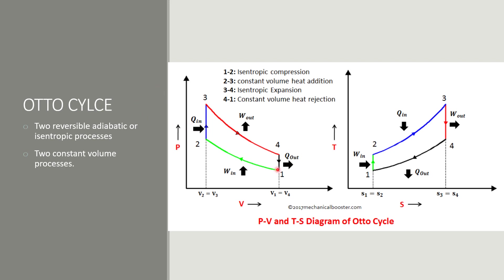In the Otto cycle, we have an isentropic compression from 1 to 2, then we have a constant volume heat addition process. Finally, we have an isentropic expansion process, and then we have an exhaust cycle that is 4 to 1.